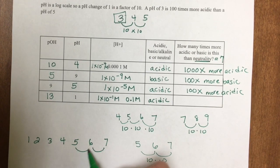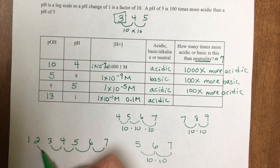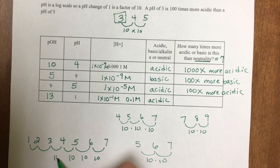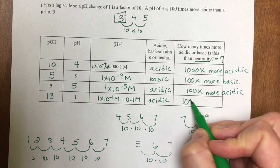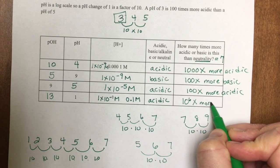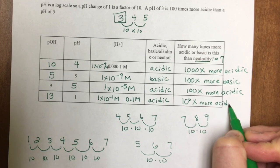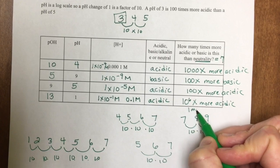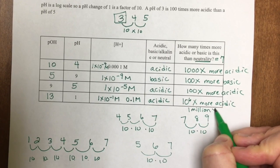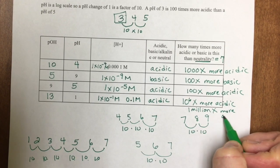This is 1, 2, 3, 4, 5, 6 steps. So I have 10 to the 6th times more acidic, which we know 10 to the 6th is 1 million. So it's 1 million times more acidic than neutrality.